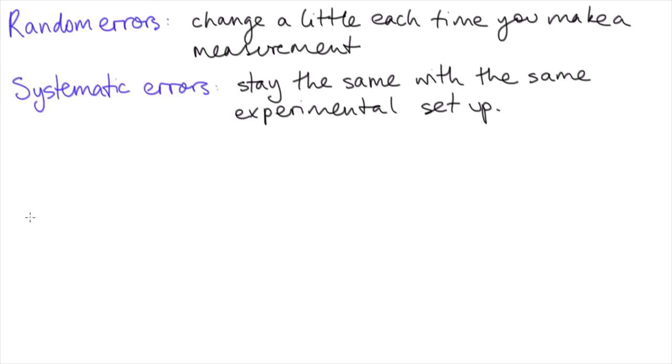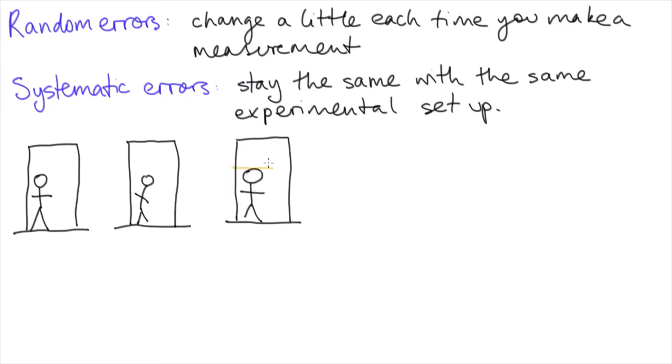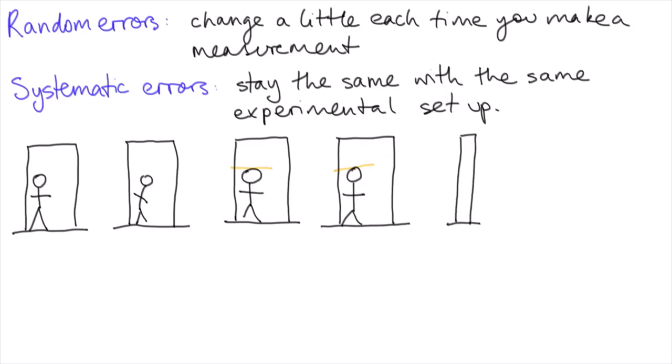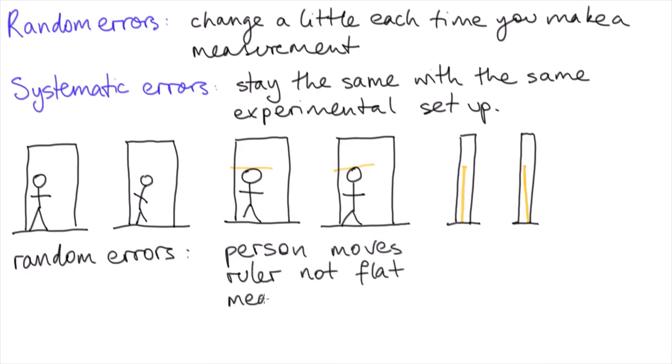So let's go back to my system for measuring someone's height and think about what sort of errors might come into this experiment. First of all, the person being measured might not stand the same way each time. And then the person doing the measurement might not balance the ruler perfectly horizontal, or maybe they hold the measuring tape not quite vertical, or even not flush against the floor. So these things are all examples of random errors.